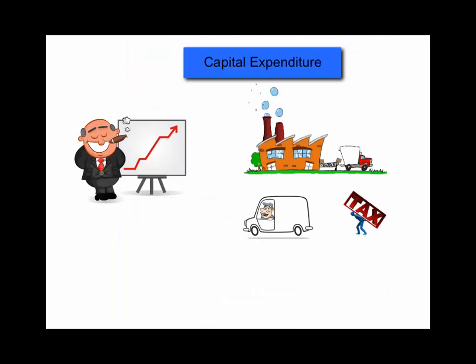If a business owner uses money in the bank to buy land and a factory to manufacture toy trains, then this is considered to be capital expenditure.